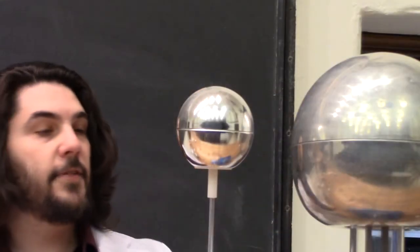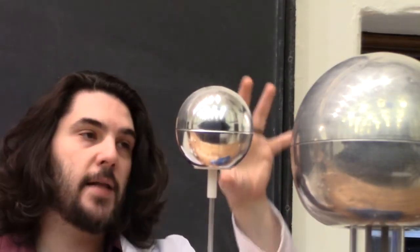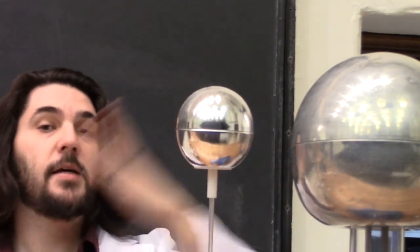This ball is on a flexible stick, so it can be electrically attracted to the large sphere before being repelled, and it will bounce back and forth.